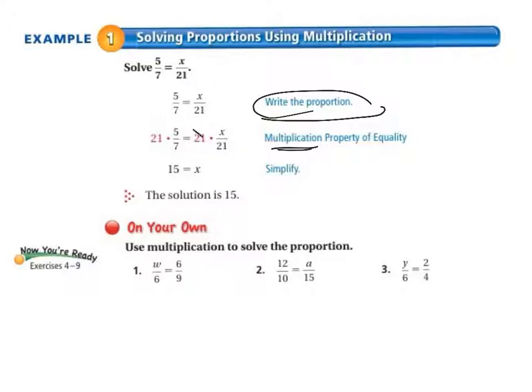That leaves us an x on the right hand side. We can do some quick cross canceling on the left hand side. Our 7 goes into itself once and it goes into 21 three times. 3 times 5 equals 15. So that leaves us x equal to 15. The solution is 15.